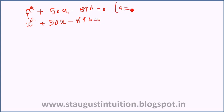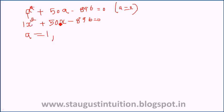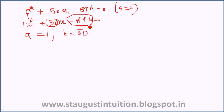In this equation, instead of a I will use x. Here a equals 1, b equals 50, and c equals negative 896. We apply the discriminant b squared minus 4ac.